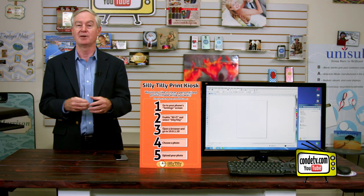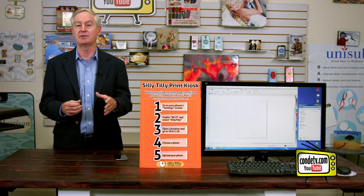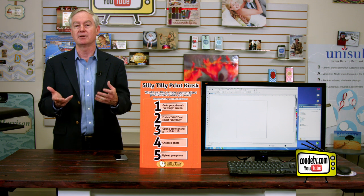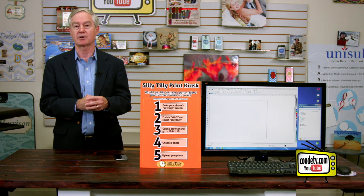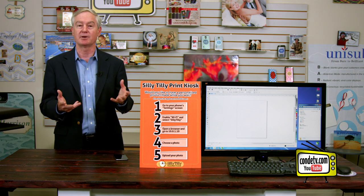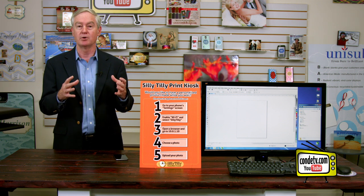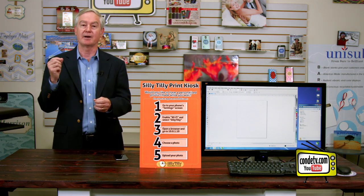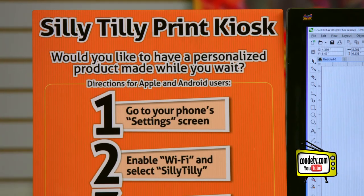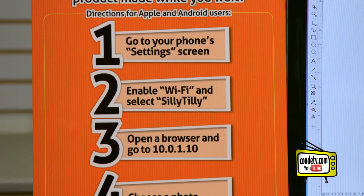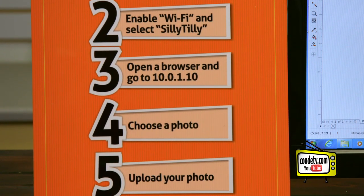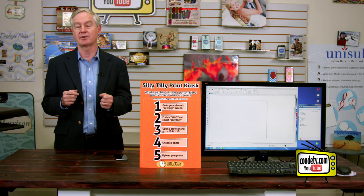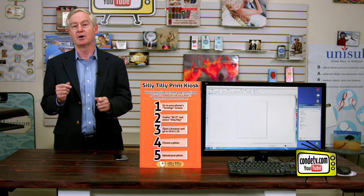We want to do that without any hassle — no need to email the photo to you, no need to text it. They simply walk up, turn on their phone, go to their Wi-Fi, and connect to your little Wi-Fi network. Now your Wi-Fi network is fake — it really doesn't have an internet connection. It's just a local Wi-Fi network that connects that smartphone to your laptop or computer. They connect to your network, go to their browser, and you instruct them — as shown on a sign — to just type in a little IP address, and instantly they'll have a screen on their phone that allows them with one click to select a photograph, and instantly it shows up on your computer.